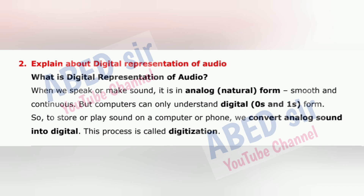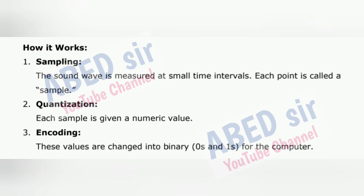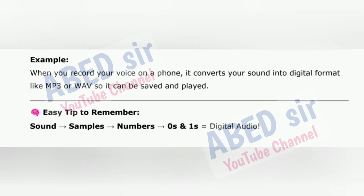How it works: 1. Sampling — the sound wave is measured at small time intervals; each point is called a sample. 2. Quantization — each sample is given a numeric value. 3. Encoding — these values are changed into binary (zeros and ones) for the computer. Example: When you record your voice on a phone, it converts your sound into digital format like MP3 or WAV. Easy tip: Sound → samples → numbers → zeros and ones = digital audio.